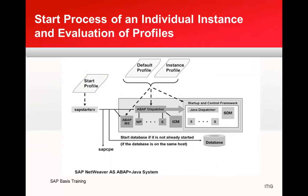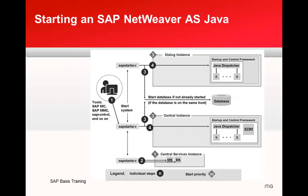This slide covers the start process for an individual instance and profile evaluation for ABAP plus Java. Then it shows starting an AS Java system — that is a system with no ABAP, only Java — showing the sequence in which the system start takes place.